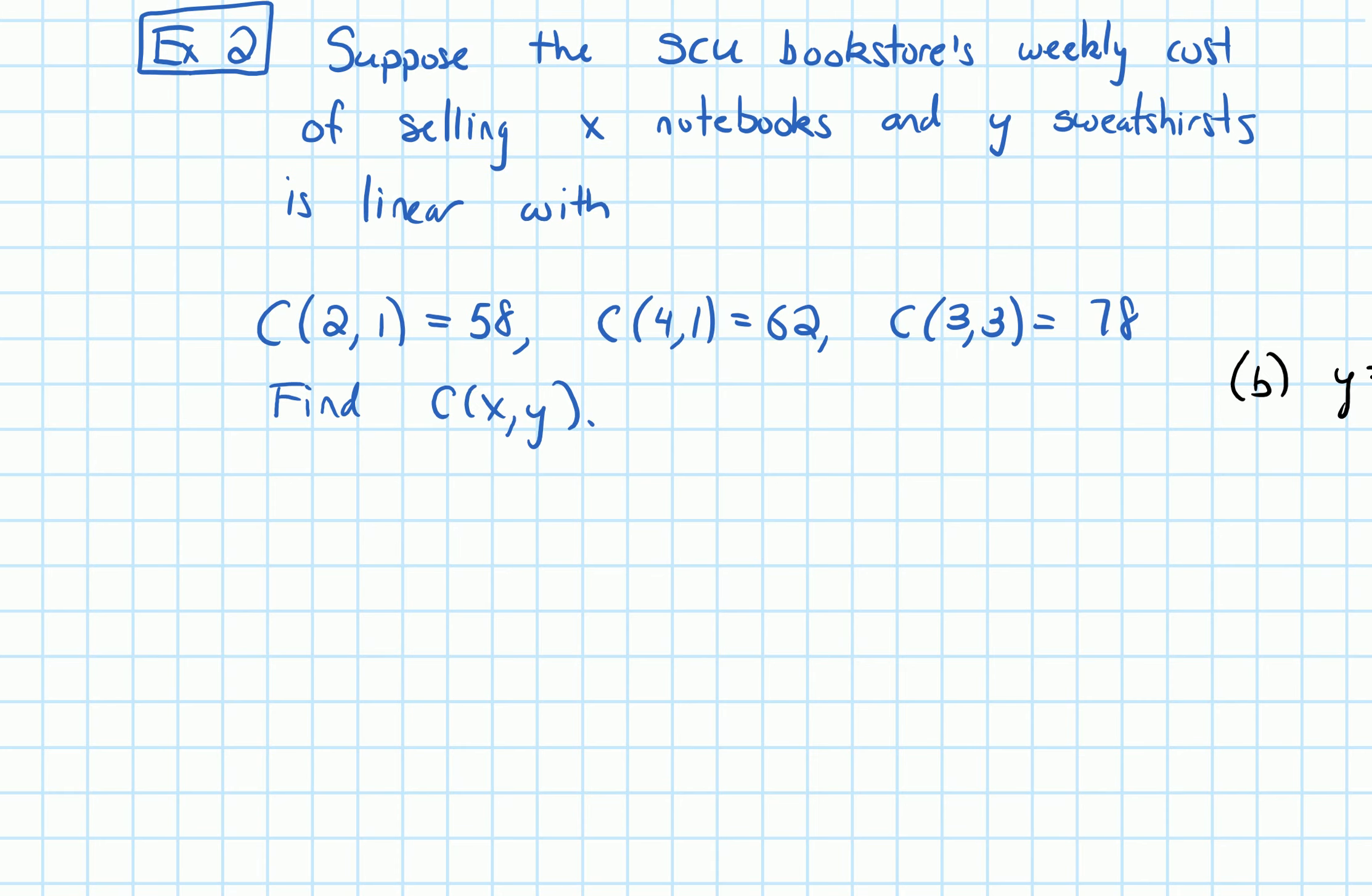Okay, so how do we do this? We're trying to find this cost function. So let's just start off by writing down the general formula for this cost function. So C of x comma y is linear, which means it's going to have the form maybe some constant out in front. I'll call that a₀ plus some x term. So I'll write x and there could be a coefficient in front of the x, which I'll call a₁ and then some term with the y. And I'll call its coefficient a₂. Okay, so let's let this be the cost function.